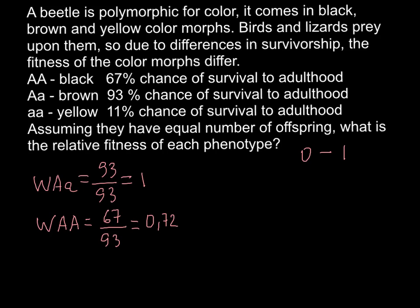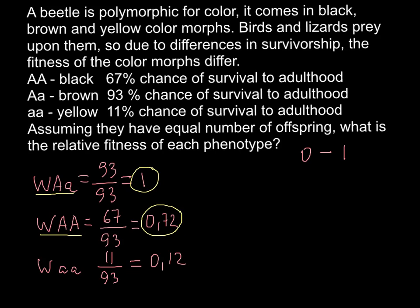Now we can also find the relative fitness of the homozygous recessive. W for aa equals 11 divided by 93, which gives us 0.12. So the numbers are: heterozygous has a relative fitness of 1, homozygous dominant has a relative fitness of 0.72, and homozygous recessive has a relative fitness of 0.12. Of course, these numbers are rounded to two decimal places.